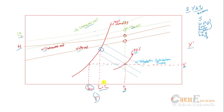Suppose you know wet bulb temperature and dry bulb temperature. First, extrapolate the wet bulb temperature onto the 100% humidity curve. Then follow the adiabatic saturation curve to where the dry bulb temperature meets it — that point on the y-axis gives absolute humidity. From there, extending to the 100% humidity curve gives dew point and percentage humidity, and similarly humid volume and enthalpy.